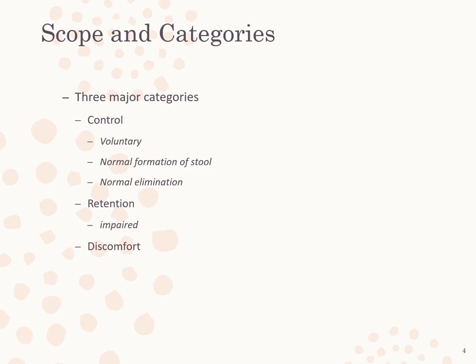The scope of this concept includes the normal or expected physiological process of waste formation and excretion by the GI and renal systems, as well as problems associated with this process. The kidneys are responsible for the removal of metabolic waste from the blood in the form of urine, and the GI tract removes digestive waste in the form of stool. Excretion of urine and stool normally occurs under voluntary control. A wide range of problems and conditions contribute to impaired elimination.